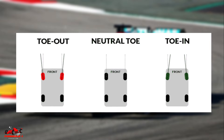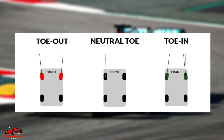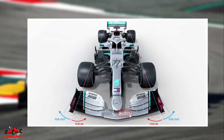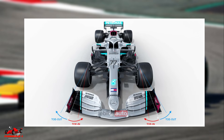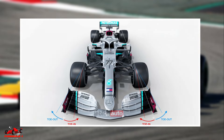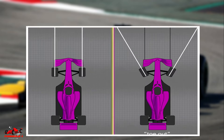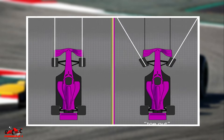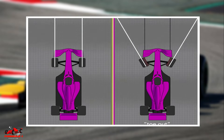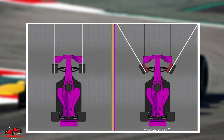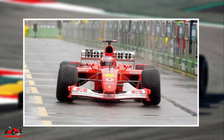In most cases, an F1 car will be set up to have about 1 degree of negative toe — wheels pointing away from the center — for the front tires, and a 1 to 2 degree positive toe — wheels pointing towards the center — for the rear tires.